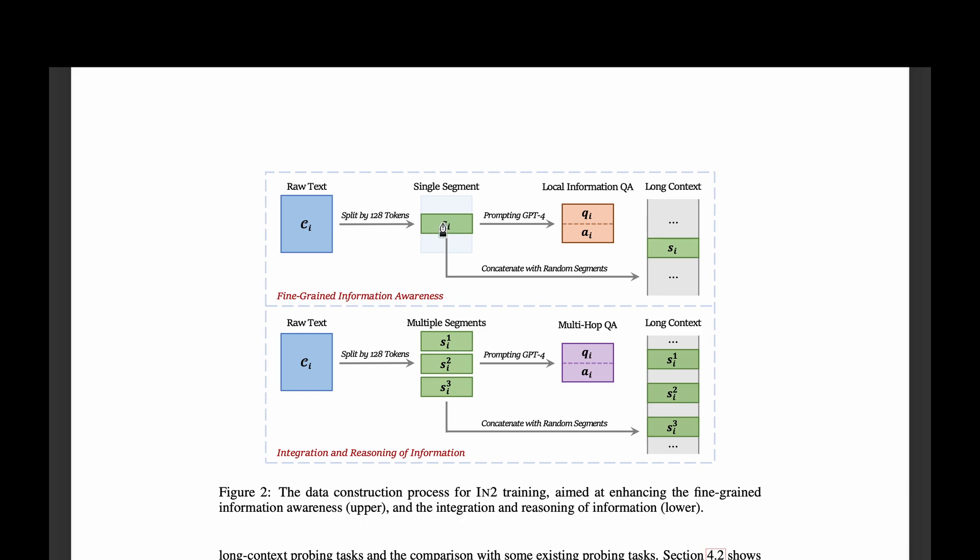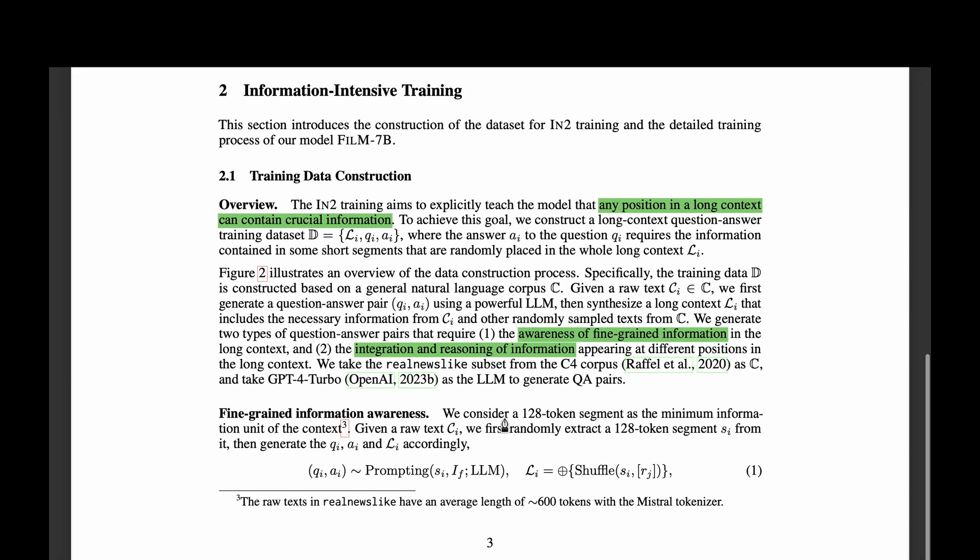the paper proposes integration and reasoning of information. What we do in this case is we consider a set of segments instead of just a single one. In this example, it's depicted with three segments. And this creates a multi-hop question answering scenario where the LLM has to do at least two passes of question answering. And we modify the instruction prompt in such a way that the LLM answers accordingly. And what we do is concatenate the set of segments along with some of the randomly sampled segments from the dataset CI, and we create this long context.